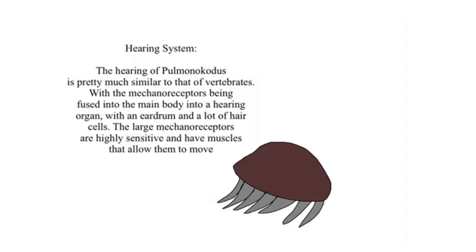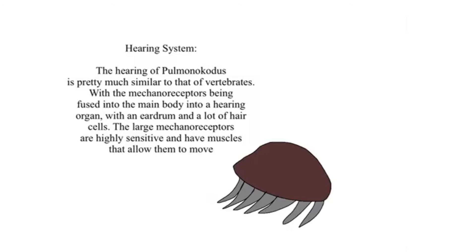There might also be a way for these organisms to process all their metabolic waste, having a liver-like organ and eight nephridia, which would be analogous to kidneys.